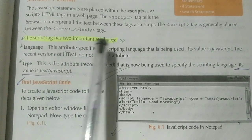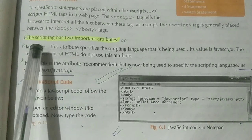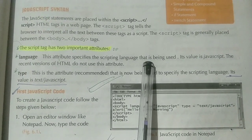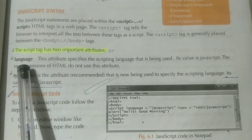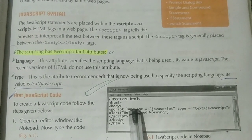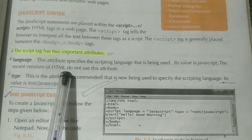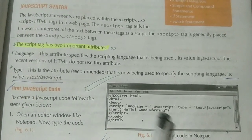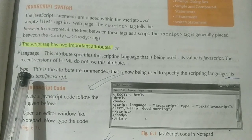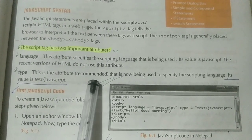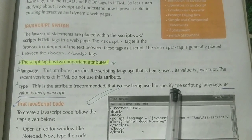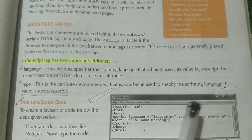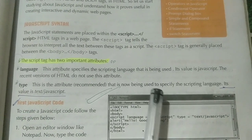The script tag has two important attributes: language and type. The language attribute specifies the scripting language being used, and its value is JavaScript. However, the recent version of HTML does not use this attribute. The type attribute is the recommended one currently being used to specify the scripting language, and its value is text/javascript. So in the newer version, type is used instead of language.